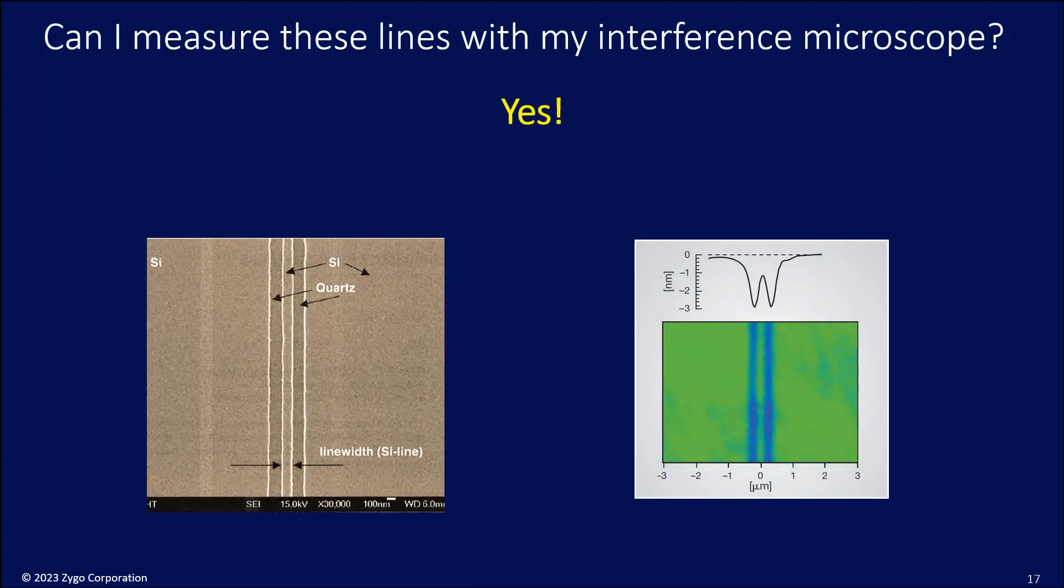If you go ahead and make the measurement, you find out that, in fact, you can. You can see these two lines in an interference microscope at high magnification. The strange thing is that the trench depth measures only 3 nanometers, not 26 nanometers. What's going on here?